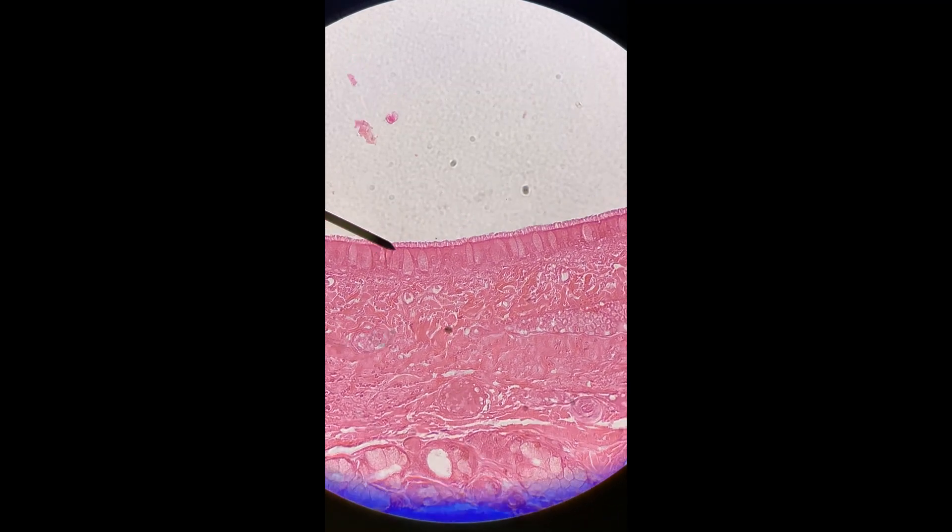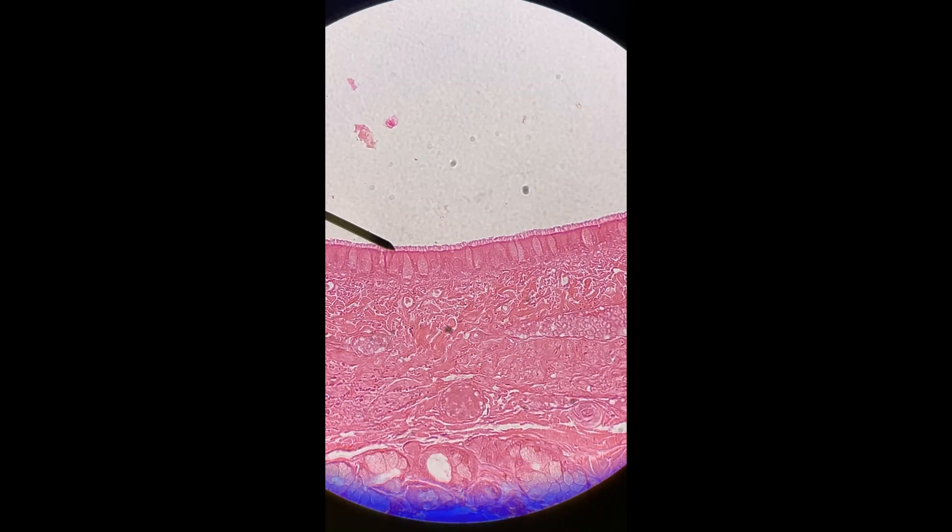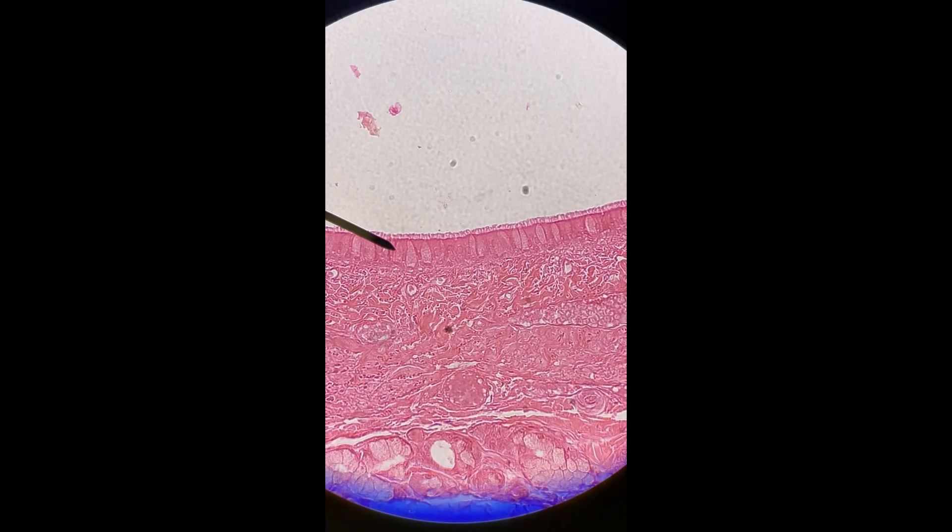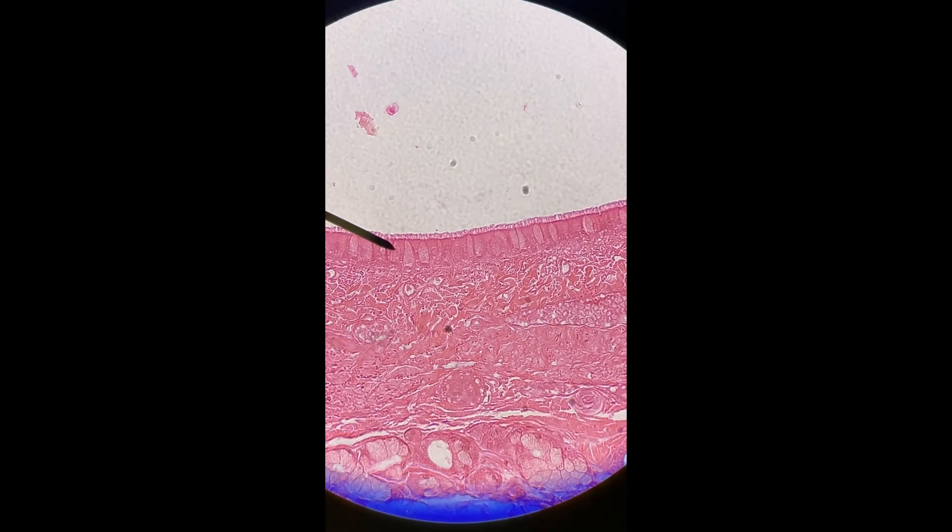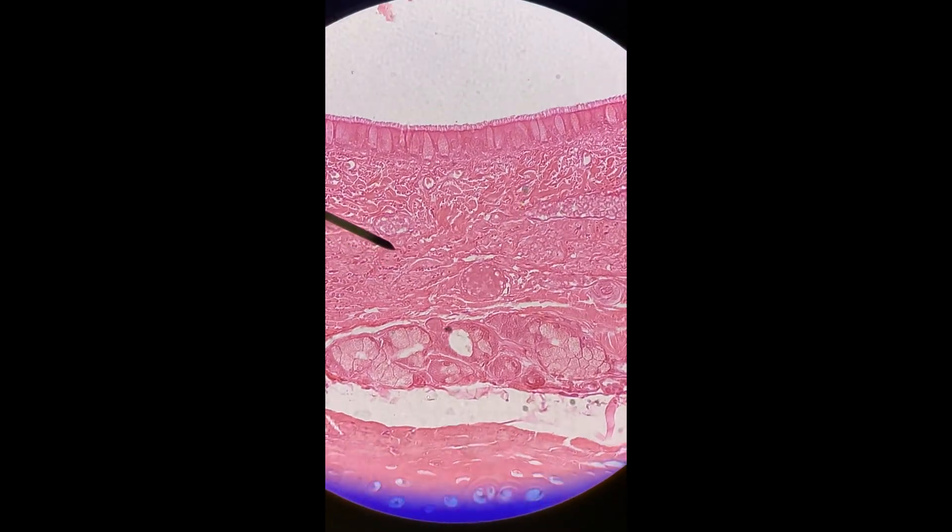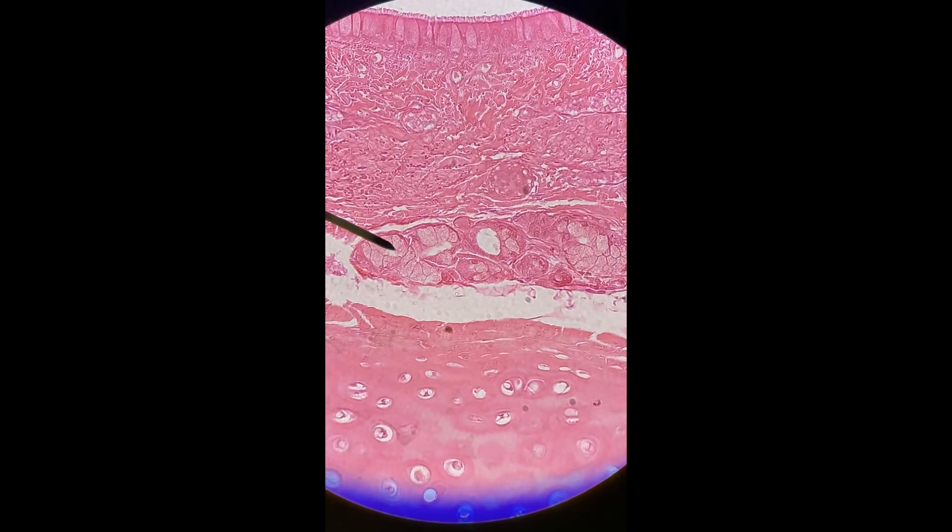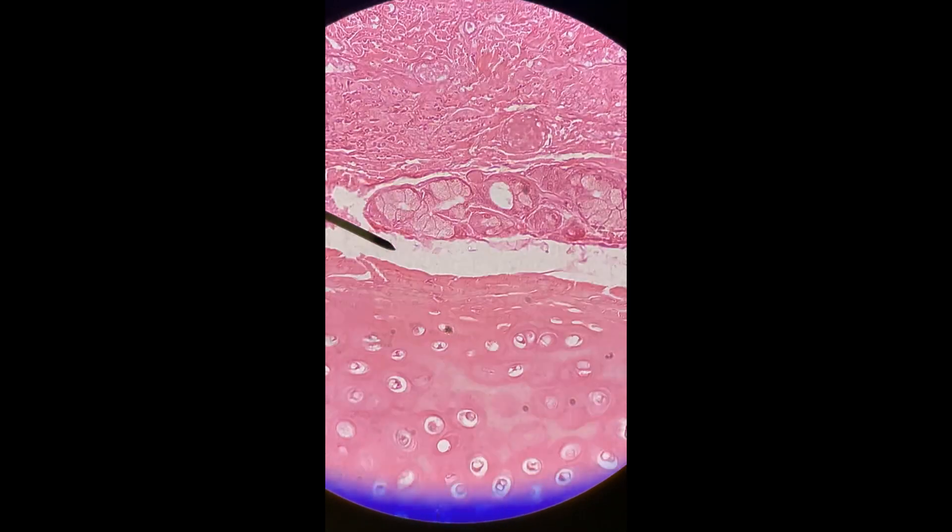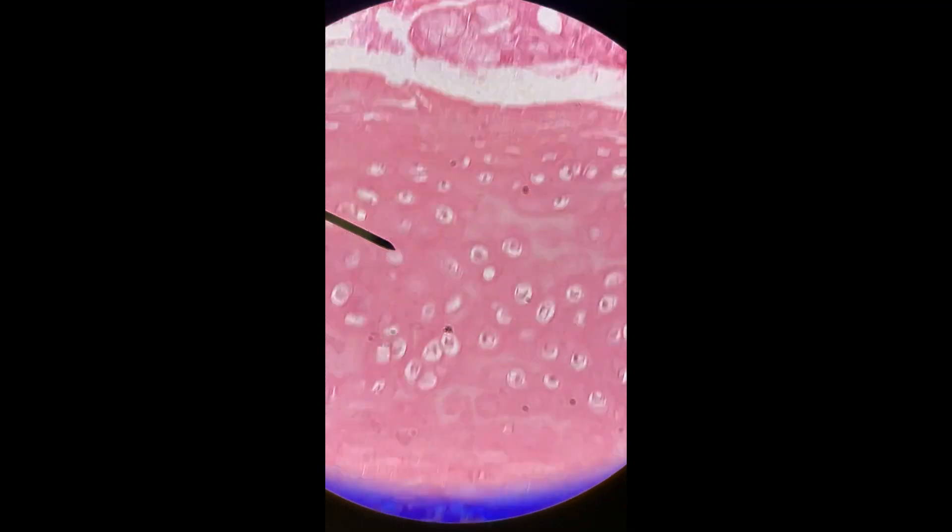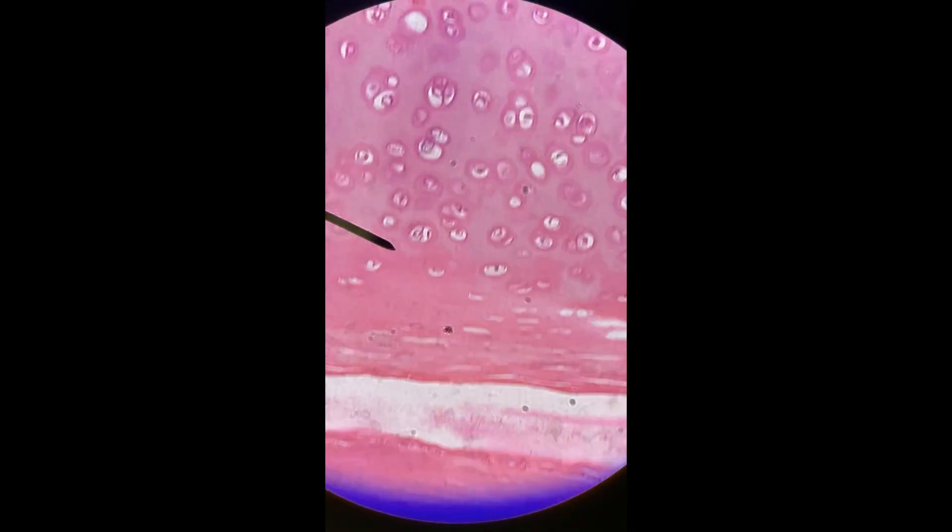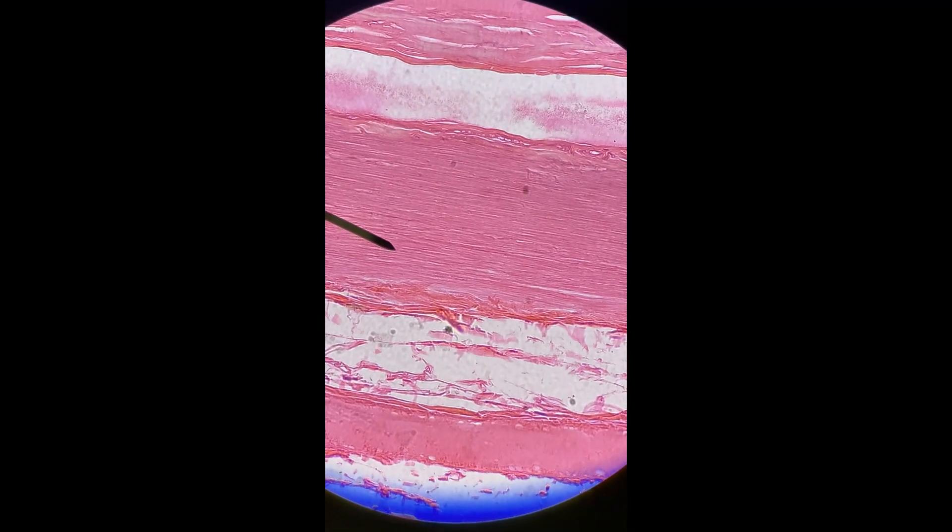From the top down: cilia on the ciliated pseudostratified columnar epithelium, goblet cells are these sort of hollow-looking things right here, this is a layer of areolar connective tissue, then we get down into some of these seromucus glands right here. Hyaline cartilage is pretty unmissable, smooth muscle right there.